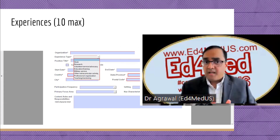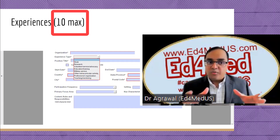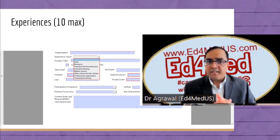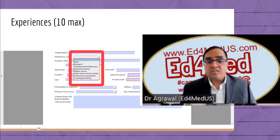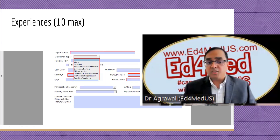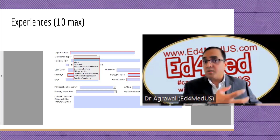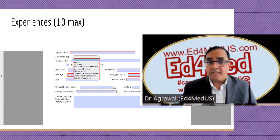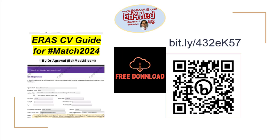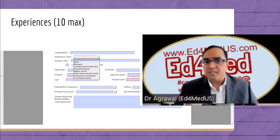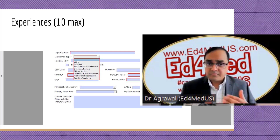Let's start by looking at the experiences. You can put up to 10 experiences. Trying to bring this down to 10 experiences helps program directors because they can really focus on the most important ones. Besides work, research, and volunteer experiences, you can choose education training — which for IMGs means postgraduate or residency training in their home country — extracurricular activities and hobbies, professional organizations, and teaching and mentoring experience.